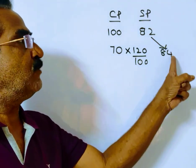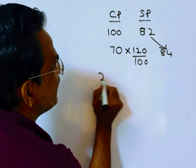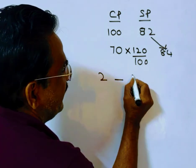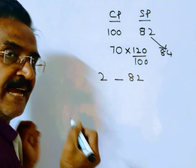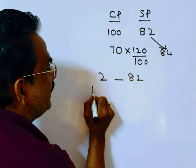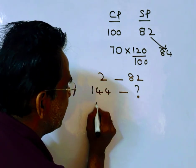Friends, if the increase is Rs. 2, the selling price is 82. If the increase is Rs. 144, as given in the problem, the selling price will be Rs. 144 upon Rs. 2 into Rs. 82.